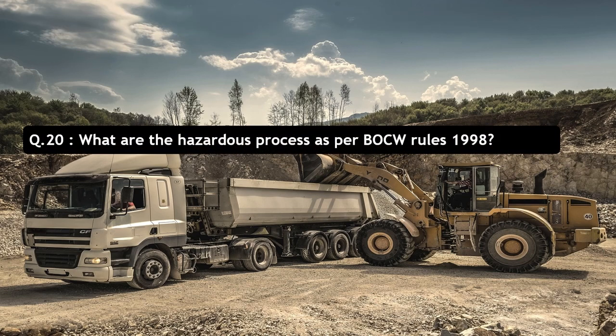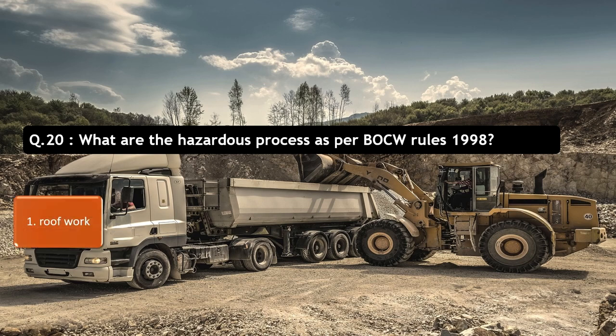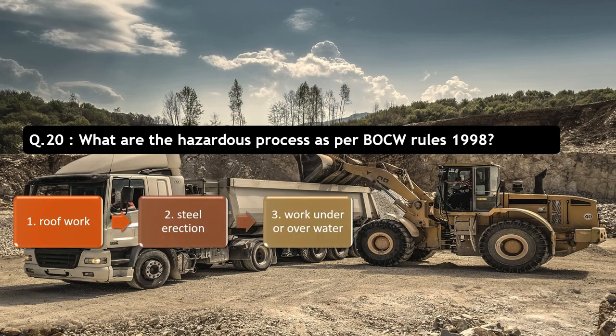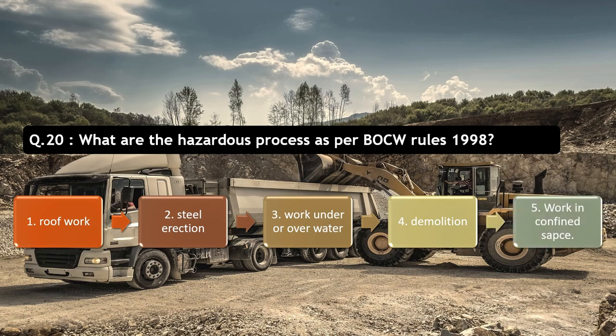Question number 20: What are the hazardous processes as per BOCW Rules 1998? There are five processes described as hazardous under the BOCW Act and Rules 1998. First hazardous process is roof work. Second is steel erection. Third is work under or over water. Fourth is demolition. Fifth is work in a confined space.